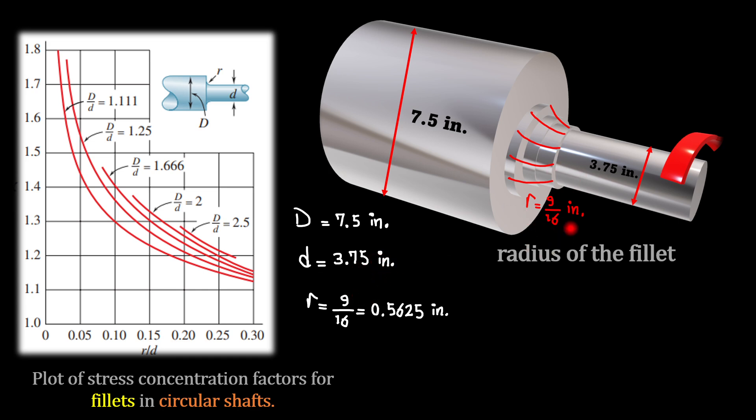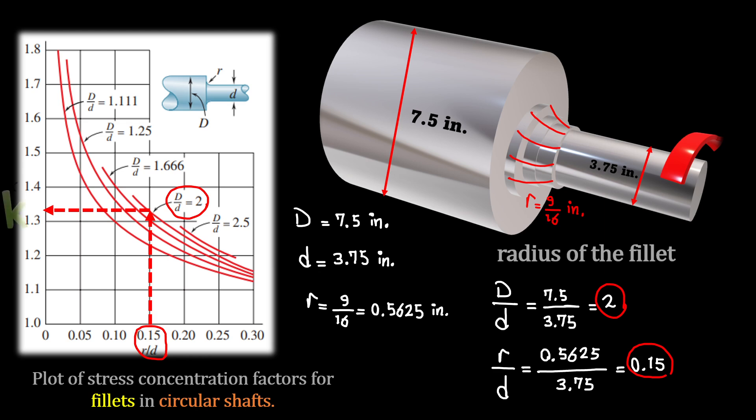And the radius of fillet is 9 over 16, which is provided. Then by having R over d and D over d, R over d is 0.15. If you climb that up to reach the D over d, which is 2, this graph, and extend it to the vertical axis, it gives you a K equal to almost 1.33.